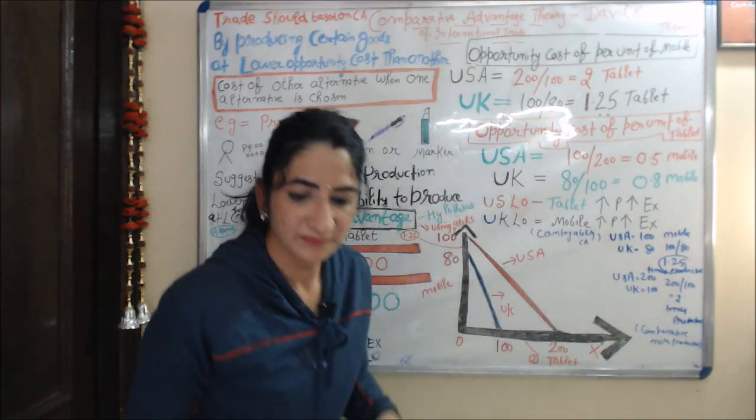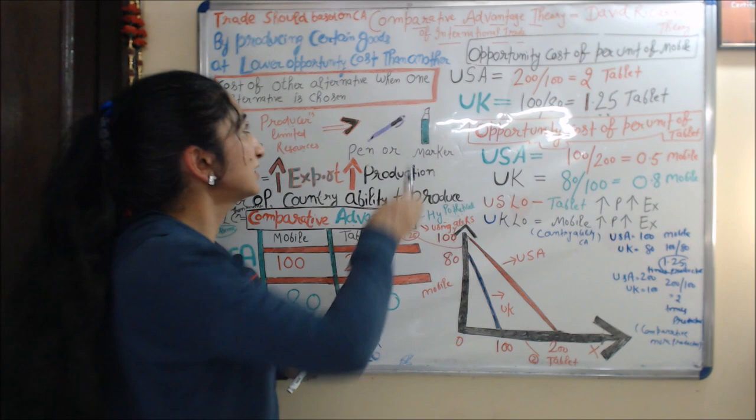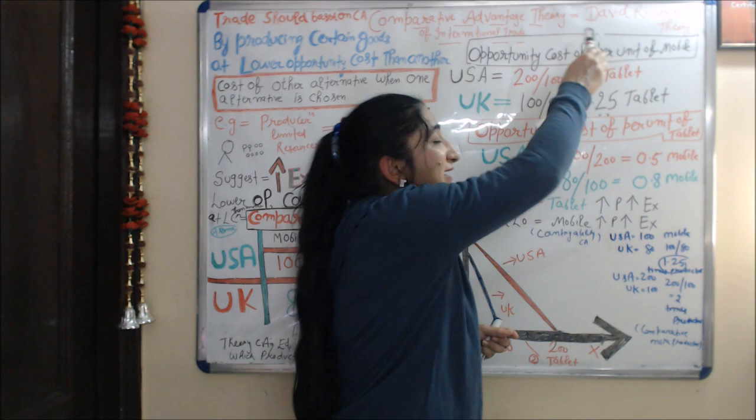Hello everyone, my name is Mini Seti. Today we are going to learn about the comparative advantage theory of international trade. This theory is given by David Ricardo.